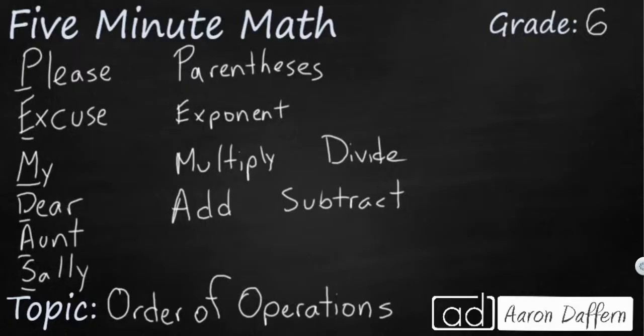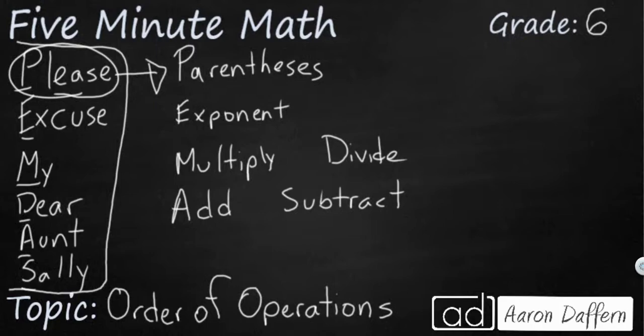If you've ever heard of order of operations, you probably have heard this mnemonic over here on the left side. It says please excuse my dear Aunt Sally. What we use this for is the first letter of each word tells us the order in which we simplify expressions. Please is for parentheses. We use the P for parentheses.